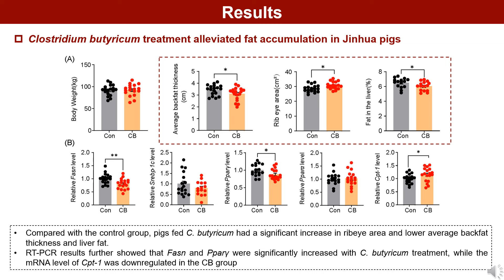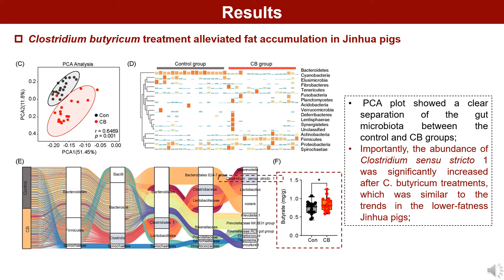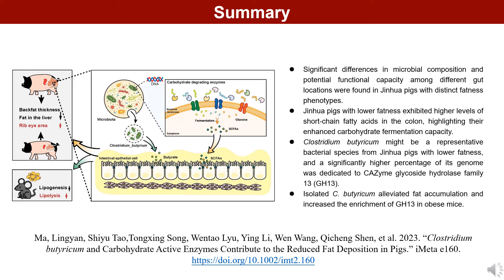Finally, pigs fed C. butyricum had a significant increase in ribeye area and lower average back fat thickness and liver fat. Importantly, the abundance of Clostridium Sensu stricto-1 was significantly increased after C. butyricum treatment, which was similar to the trends in the lower fatness group. In conclusion, our study found Clostridium butyricum might be a representative bacterial species from Jinhua pigs with lower fatness, and isolated C. butyricum alleviated fat accumulation in Jinhua pigs and obese mice. These results helped to explore probiotic resources and lay a theoretical foundation for lipid metabolism-related research.